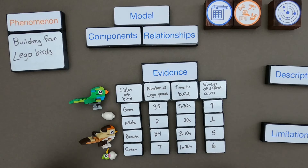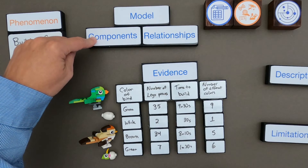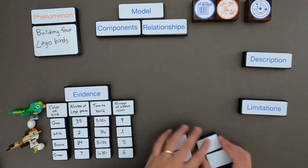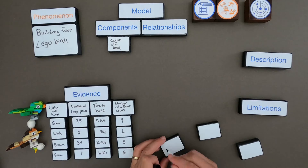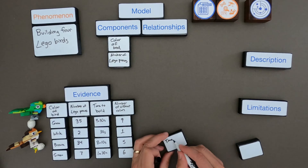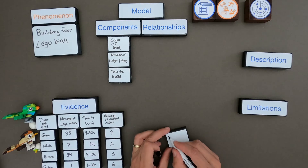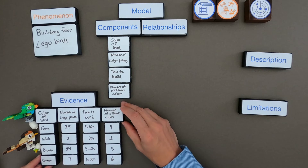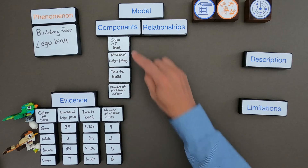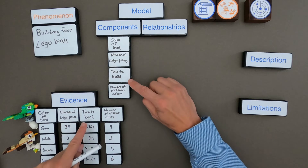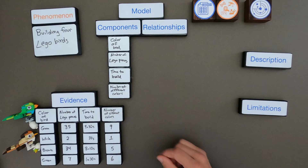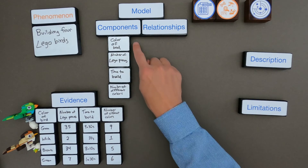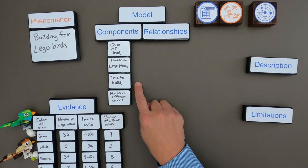Once I've looked at the evidence, the next thing I want to do is identify the different components. A real easy way to do that: in my model, all I'm doing is copying down the headings in the data table — color of bird, number of LEGO pieces, time to build, and the number of different colors. Now that I have all the components, I want to think more deeply about the relationships. How are these all related to each other?